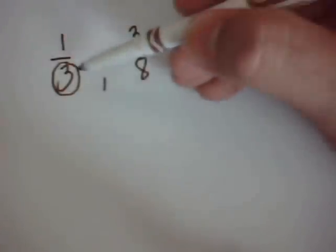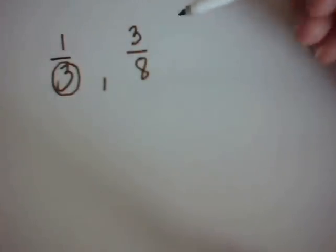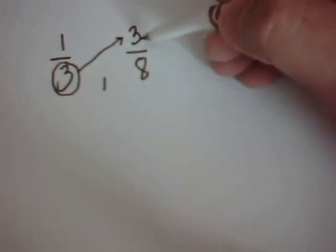Cross multiplication involves getting a denominator, whether it's the 3 or the 8. It doesn't matter where you start off, you're going to get the same thing. You're going to multiply across to your opposite numerator, in this case being the 3.